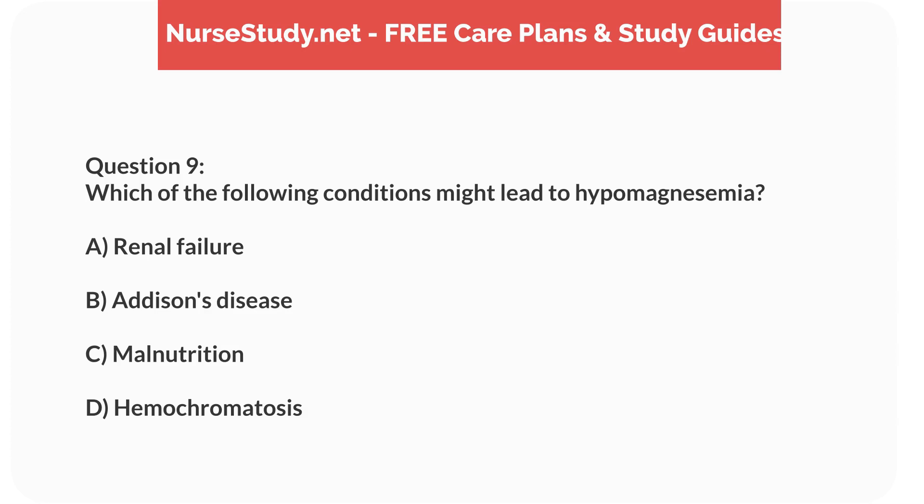Question 9. Which of the following conditions might lead to hypomagnesemia? A. Renal failure. B. Addison's disease. C. Malnutrition. D. Hemochromatosis.